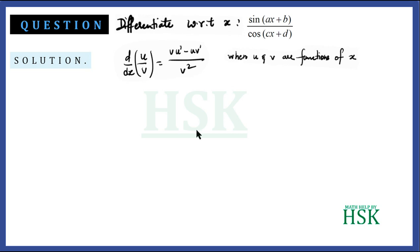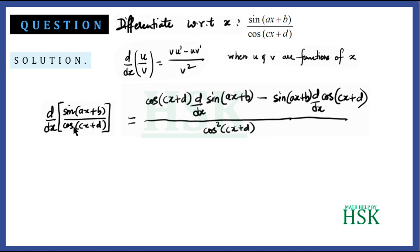So let's start solving. We have to calculate dy/dx of sin(ax + b) upon cos(cx + d). Applying the quotient rule, the square of the denominator is written in the denominator, and in the numerator we have: denominator cos(cx + d) times d/dx of the numerator, minus the numerator times d/dx of the denominator.